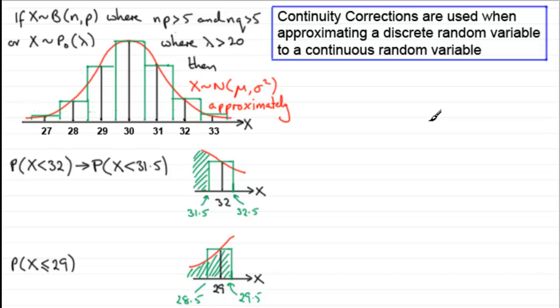So with the continuity correction, this is the same as working out the probability that X is less than 29.5. Notice we don't put an equals here when we're dealing with a continuous random variable. So it's the same as working out that X is less than 29.5.